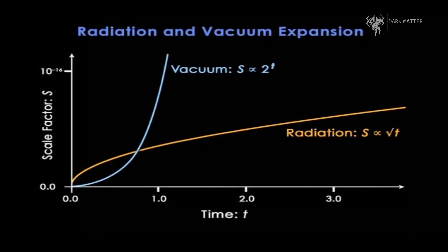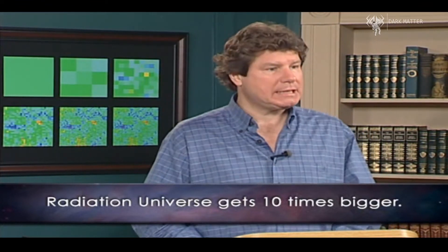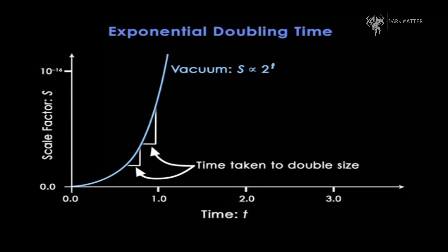This graph, which is essentially from lecture 12, shows how radiation and vacuum-dominated universes expand extremely differently. The radiation universe starts fast and decelerates, with size proportional to the square root of time. The vacuum universe starts slowly and accelerates, with its size doubling, then doubling, then doubling again - its size grows exponentially. Let's put in some numbers and allow these two universes, starting at one picosecond, to expand for just 100 picoseconds. The radiation universe, which grows with the square root of time, gets 10 times bigger, because 10 is the square root of 100.